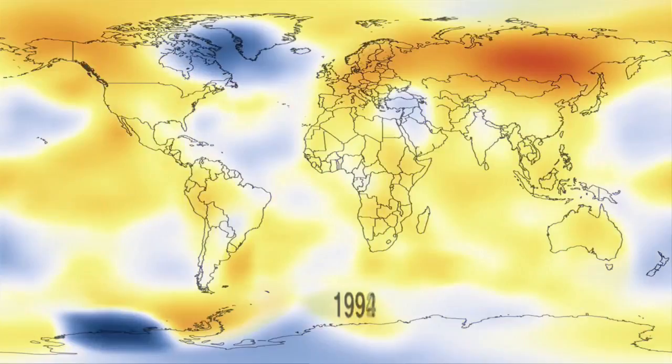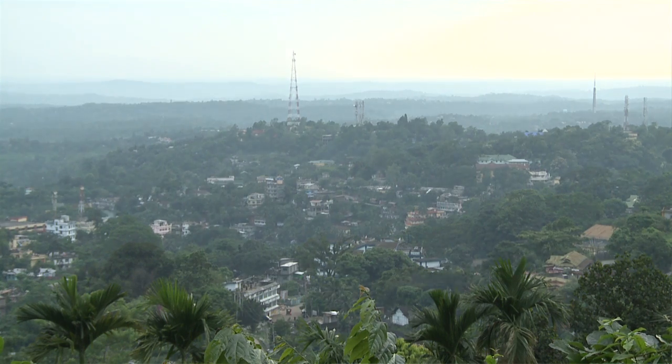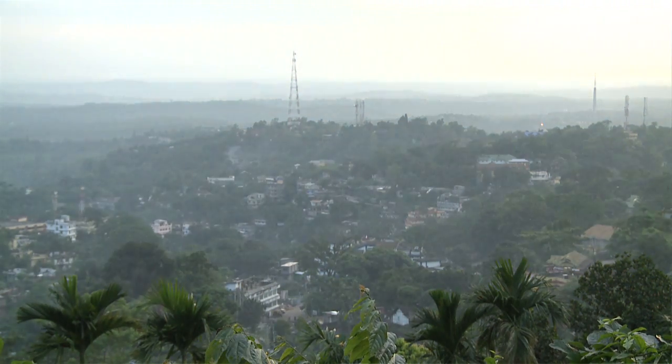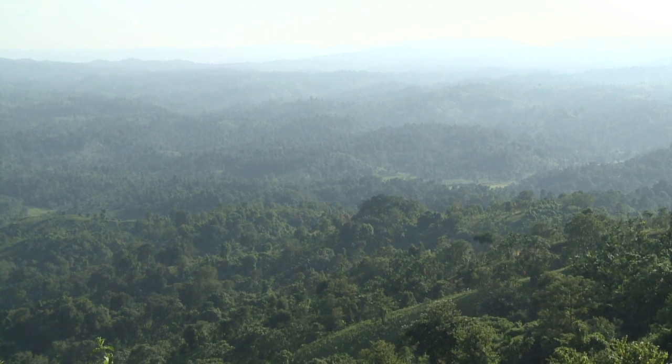For example, if you consider Garo Hills itself, the big city Tura — the air pollution is very high in Tura because of vehicles and all. But if you go to any forest area, air pollution is low not only due to absence of vehicles and industries, but also due to the presence of a large number of trees, which attract this pollution and absorb it.